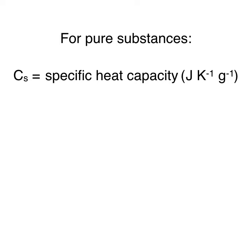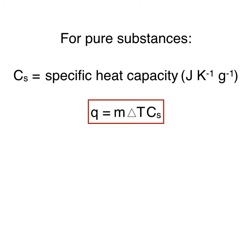Specific heat capacity tells us the amount of heat required to increase 1 gram of a substance by 1 Kelvin. Therefore, we can say the amount of heat transferred between the substance and its surroundings is equal to the mass of the substance multiplied by the temperature change multiplied by the specific heat capacity.